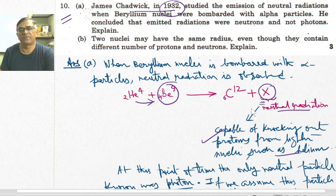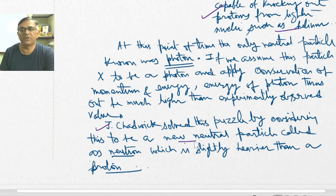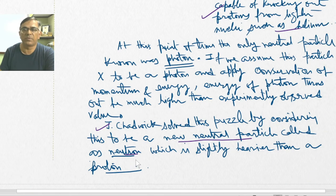The theoretical value of the energy was much higher than the experimentally observed value. This puzzle was solved by Chadwick by considering the existence of a new neutral particle called the neutron, with a mass slightly heavier than that of the proton.